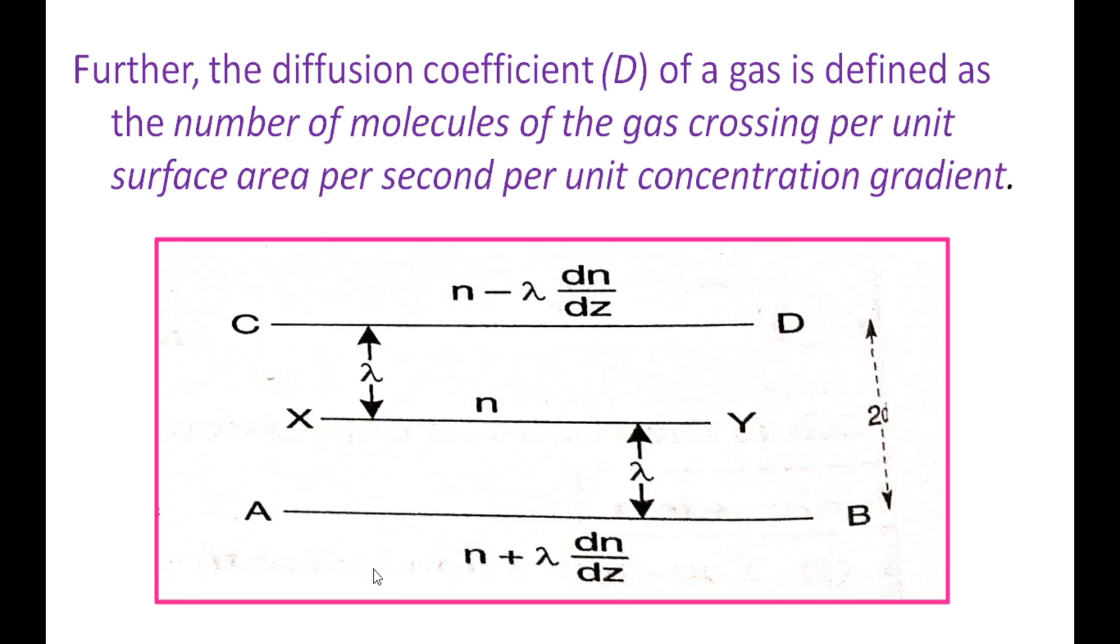In the diagram we have planes CD and AB. The intermediate plane is XY. Here the concentration of the gas increases as we have heavier gas and lighter gas. The concentration of the gas gradually increases as we move in upward direction. The dN by dz ratio increases.